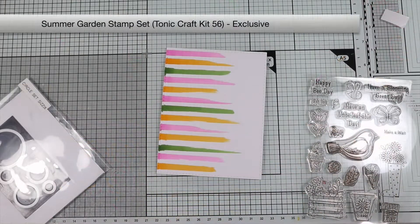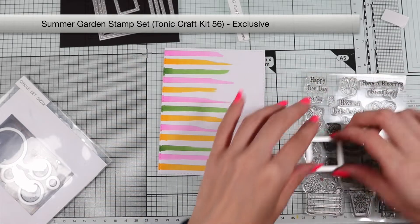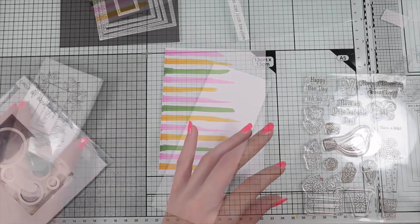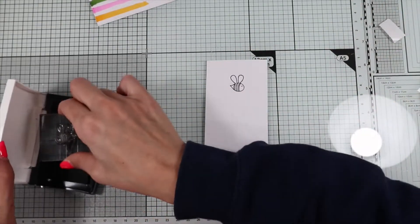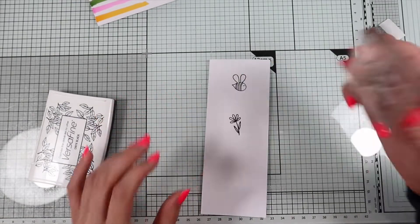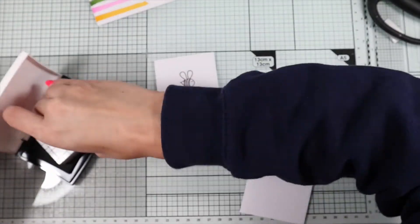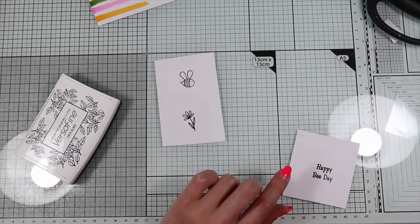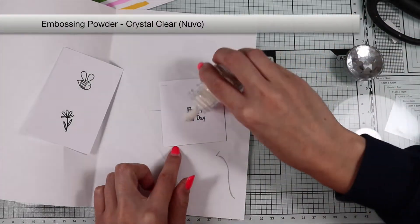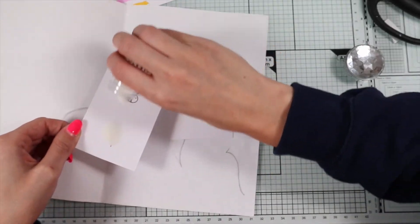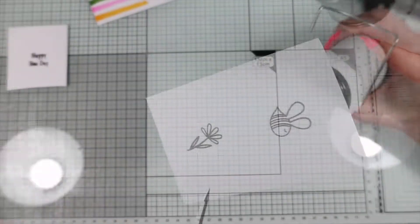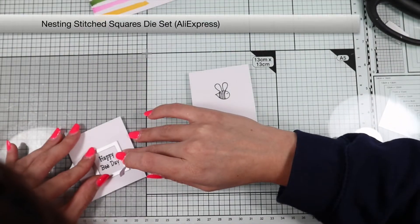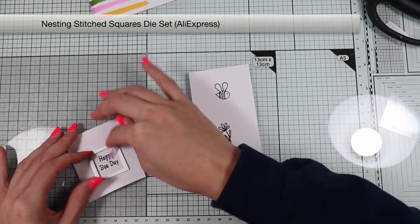Now let's decorate the card. I'd like to use the stamps included in the kit. I stamp the bee with VersaFine Onyx Black, a flower, and the sentiment happy bee day. Then I heat emboss all three stamps with a clear embossing powder.